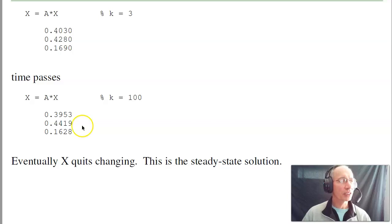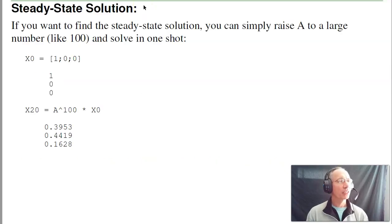Eventually, X quits changing. This is the steady state solution. To find that using matrices, all you have to do is pick a large number, like 100, and raise X to that high power. If there is a steady state, that's what it'll be. One way to check your answer is try A to the 100th power, 101, 102. If they're all the same, you're at steady state.